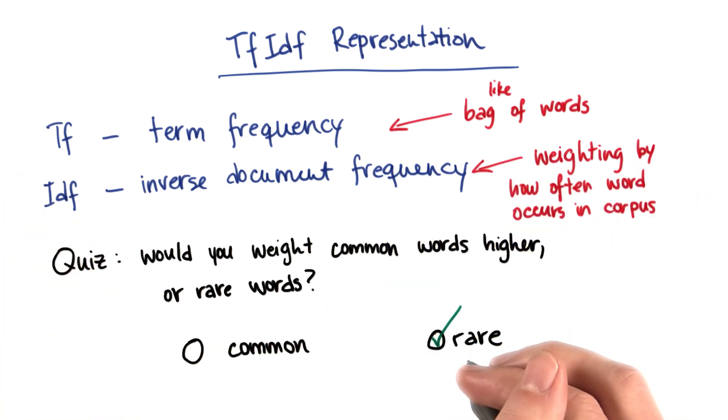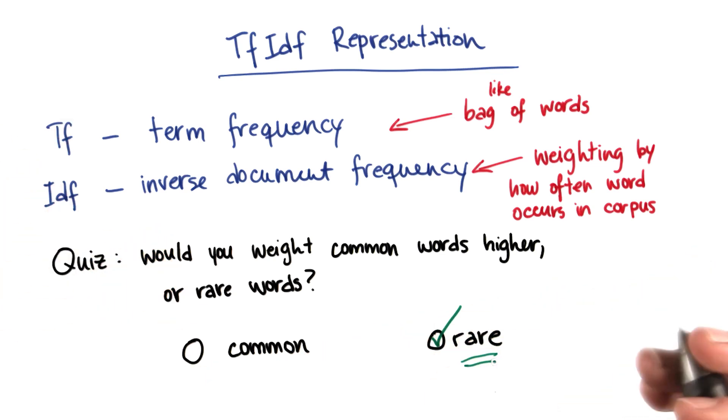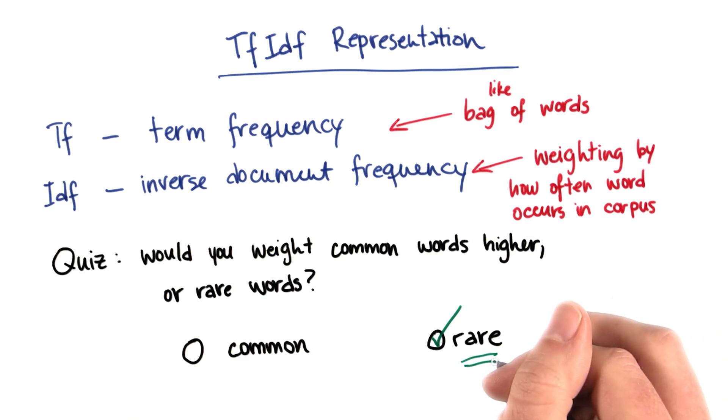So the fact that words like physics and Stanley would be rare in this corpus compared to words like Udacity or machine learning means that these might be the words that tell you the most important information about what's going on, who might be the author of a given message.